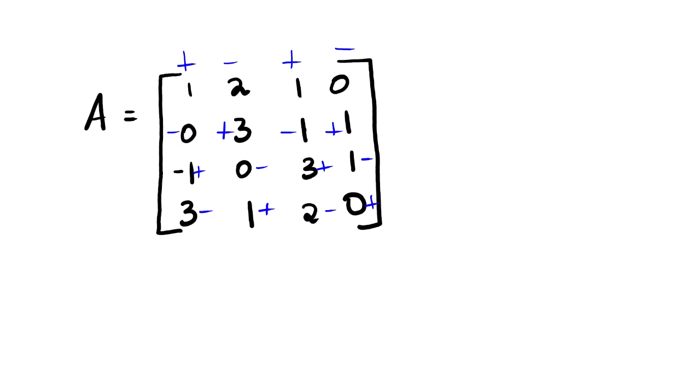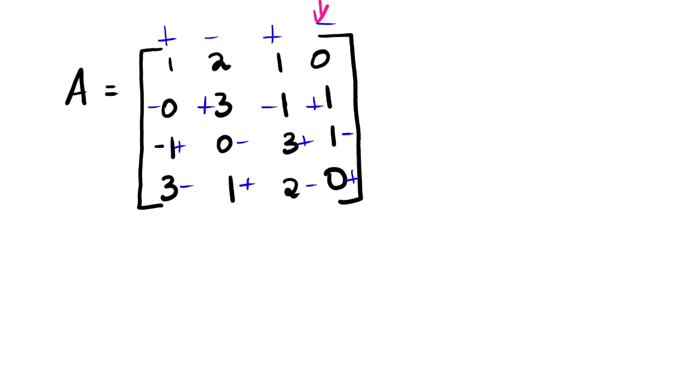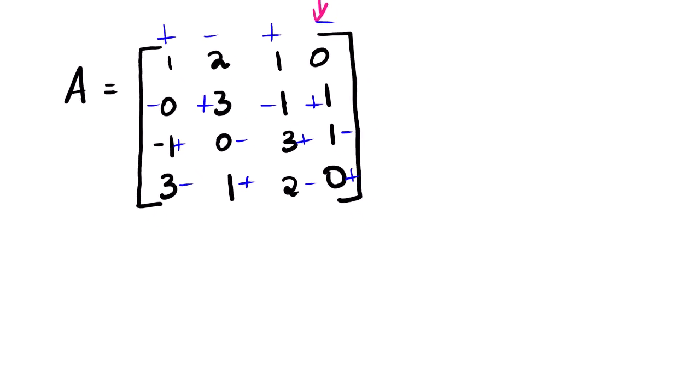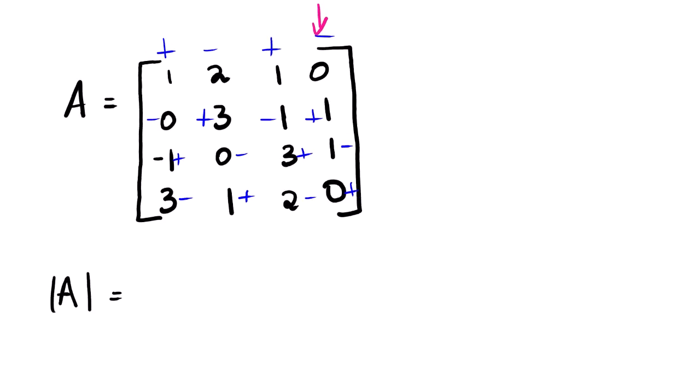In order to get the determinant using the cofactor expansion, we are going to choose a row or column which consists of zeros. In this case, we are going to expand through the last column, which has the most zeros.